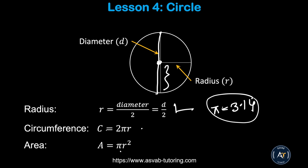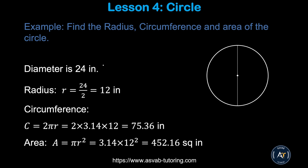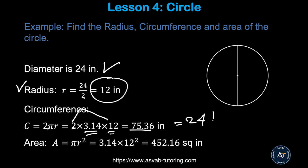Applying the formula: this circle has a diameter of 24 inches, so the radius is 24 divided by 2 equals 12 inches. The circumference equals 2 times 3.14 times 12, which gives 75.36. If the answer is needed in terms of pi, that is 24pi. The area equals pi times r squared, so 3.14 times 12 squared, which also equals 144pi. The form of the answer depends on what the actual test asks.